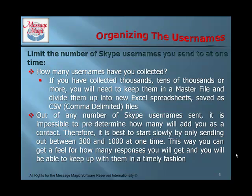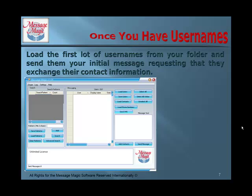Out of any number of Skype usernames sent, it is impossible to pre-determine how many will add you as a contact. Therefore, it is best to start slowly by only sending out between 300 and 1,000 at a time. This way, you can get a feel for how many responses you will get, and you'll be able to keep up with them in a timely fashion. Once you have the usernames, load the first lot from your folder and send them your initial message requesting that they exchange their contact information with you.